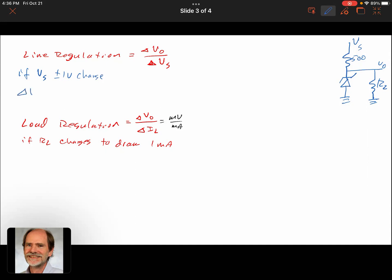So if we have Vs, if it has a plus or minus 1 volt change, then the change in Vout is equal to Rz over Rz plus that R-500 times the change in Vs. So it's a divider. That's 2 over 502 times the change in Vs, which was 1 volt. And we've got 0.00398 times Vs.